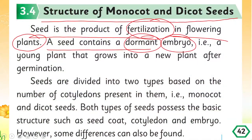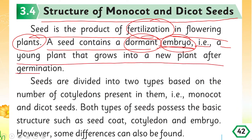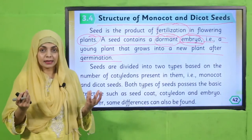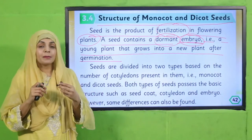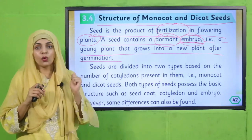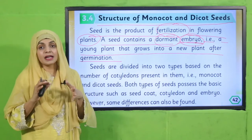A seed contains a dormant embryo. An embryo is a young plant that grows into a new plant after germination. It is a very small, tiny plant inside the seed. When the right conditions are met, it germinates and grows into a larger plant. So the small plant is already present inside the seed.